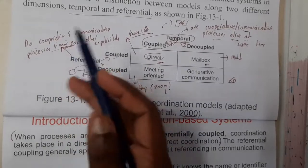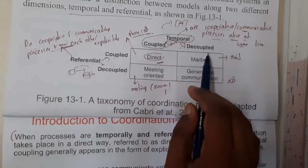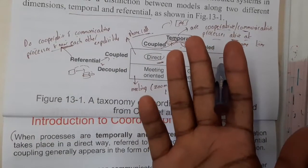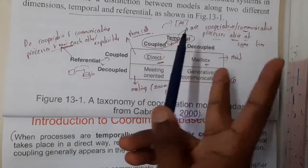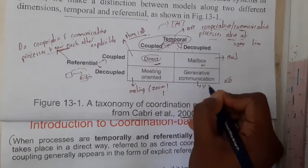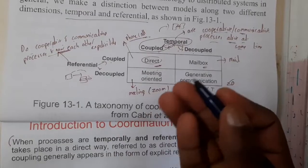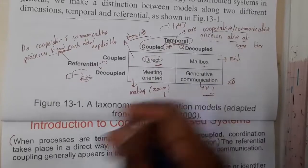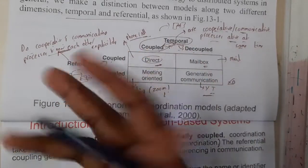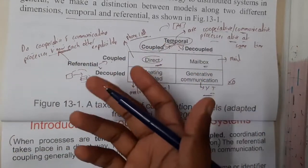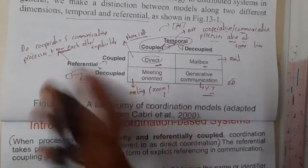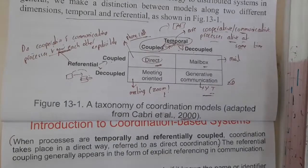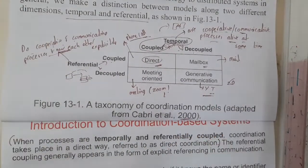Referentially decoupled and temporally decoupled means you don't know each other and you're not both alive at the same time. The best example is YouTube videos — you don't know whom you are listening to, and in most cases you are not communicating with them live. I gave real-time examples so you can remember them easily and clearly.